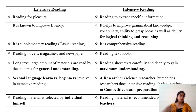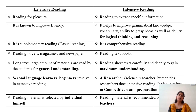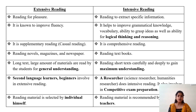Whereas intensive reading is comprehensive reading — we try to understand each and everything. Reading novels, magazines, and newspapers are examples of extensive reading, whereas reading a textbook is an example of intensive reading. In extensive reading, a large amount of material is read for general understanding, whereas for maximum understanding we employ intensive reading. Extensive reading is helpful for second language learners and beginners, whereas intensive reading is always used by researchers and is also helpful for competitive examinations. In extensive reading, reading material is selected by the individual, whereas in intensive reading, reading material is recommended by the course teacher.